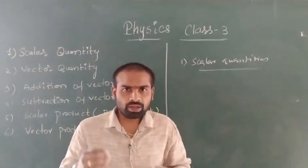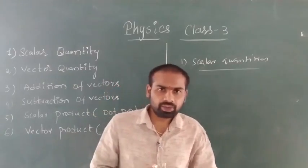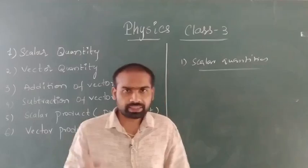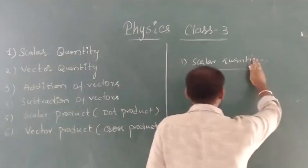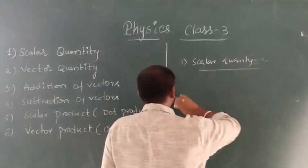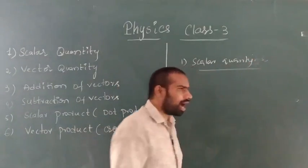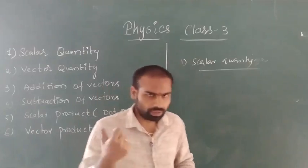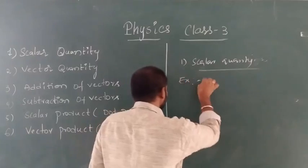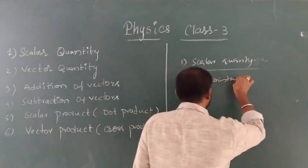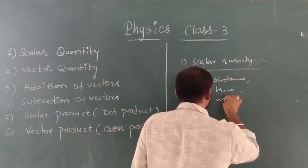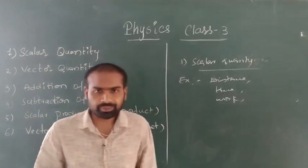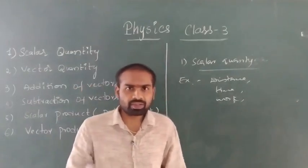What is scalar quantity? Any physical quantity having only magnitude but not direction is a scalar quantity. Scalar quantity has only magnitude but not direction. Examples of scalar quantities are distance, time, and work — these have only magnitude but not direction.